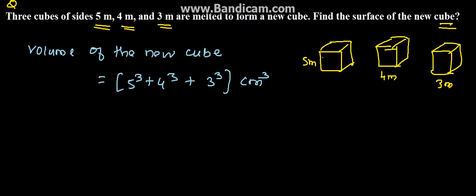Here the side given is 5 meters, so a³ is the formula for the volume of a cube. So here it is 5³, here it is 4³, and it is 3³. That is, side cubed is the formula for volume. Therefore, we can say that 125 plus 64 plus 64 plus 27, which is equal to 216 centimeter cube.